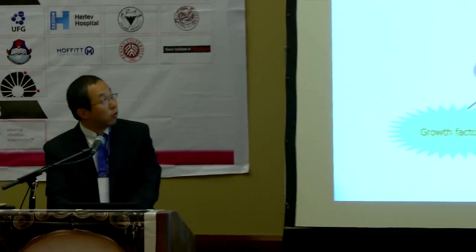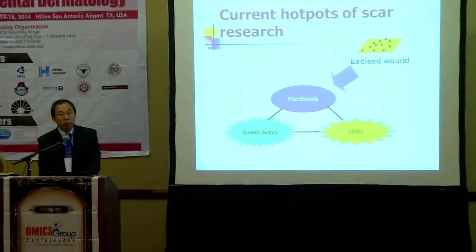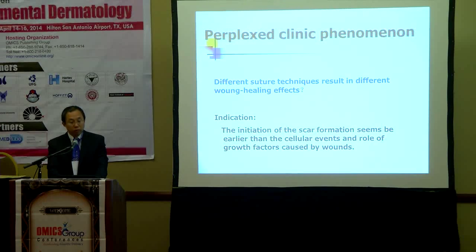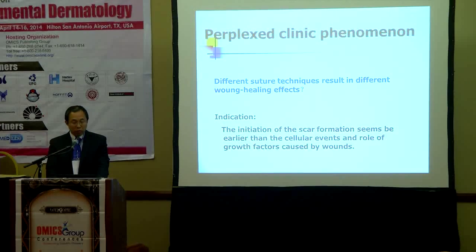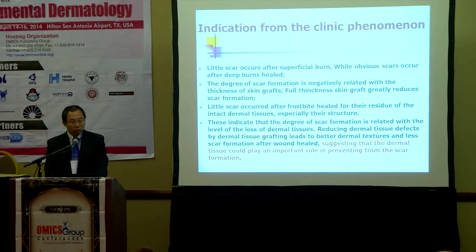Recent research has focused on fibroblasts, growth factor cytokines, and extracellular matrix components. But clinical observations gave us other clues. For example, different suture techniques result in different wound healing outcomes, indicating that the initiation of scar formation seems to occur earlier than the cellular events and the role of growth factors caused by wounds.